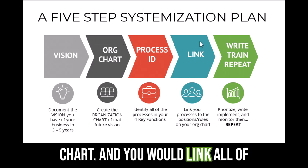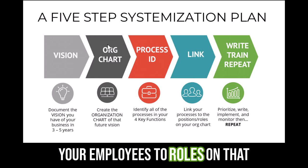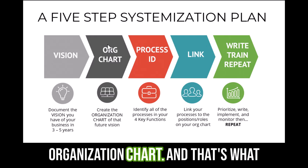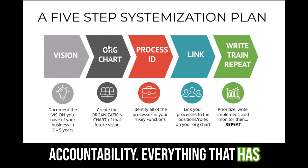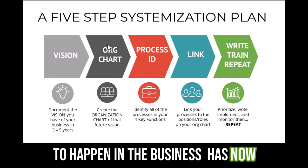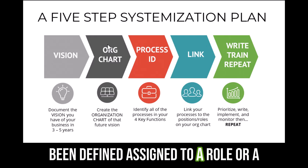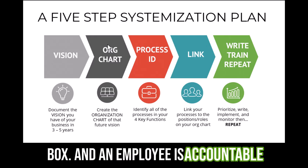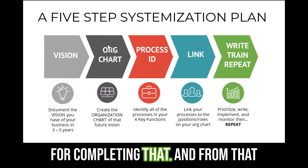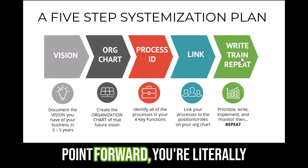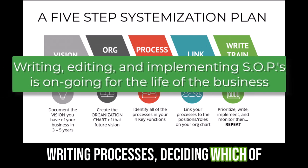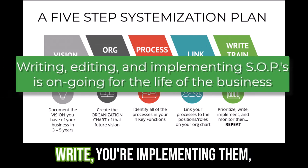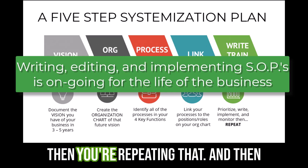You would link all of your employees to roles on that organization chart — that's what we call complete functional accountability. Everything that has to happen in the business has now been defined, assigned to a role or a box, and an employee is accountable for completing that. From that point forward, you're writing processes, deciding which are the most important to write, implementing them, monitoring their success, and then repeating that.